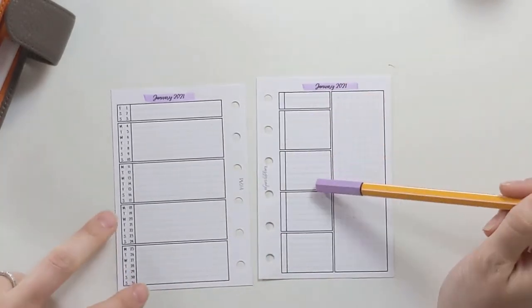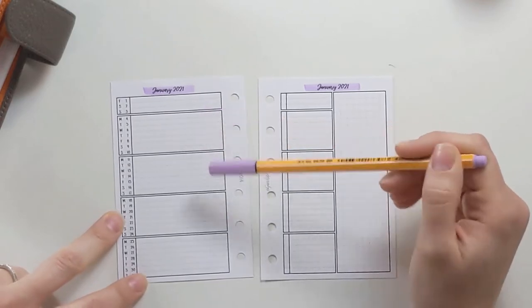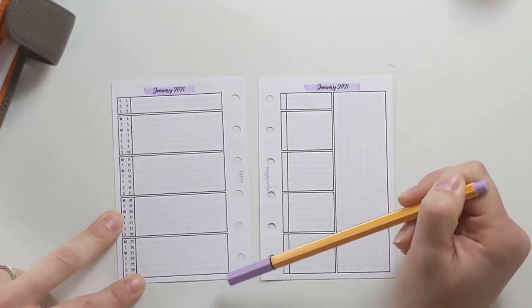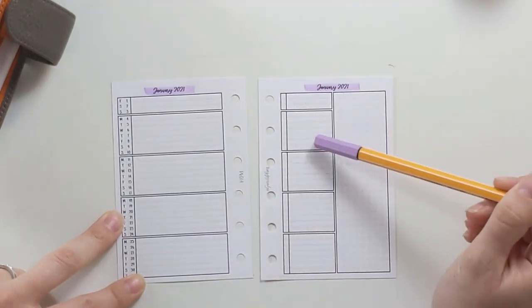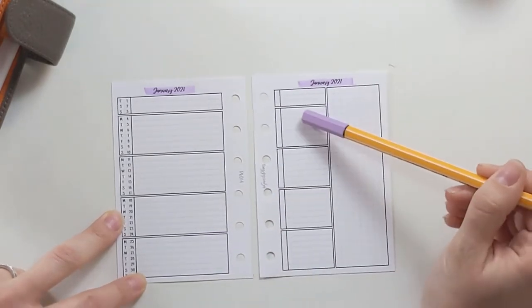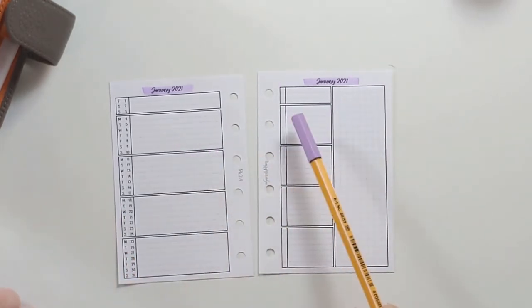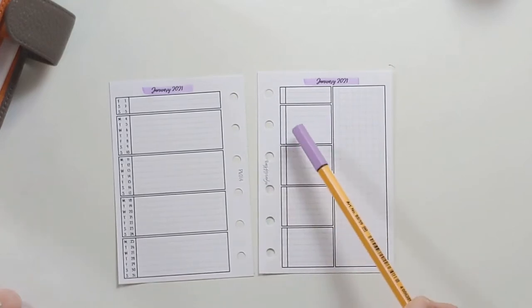Anyway, the way that this insert works is you have your weeks split up Monday start. They're split up separately. And then over here, each of these, at least the way that I use it, each of these is not necessarily like a date specific task, but a week specific task.